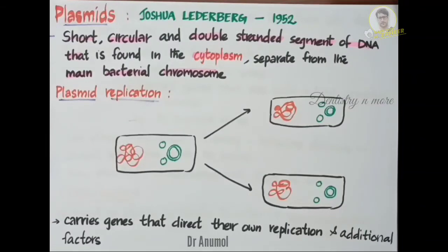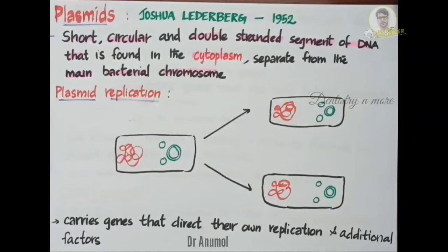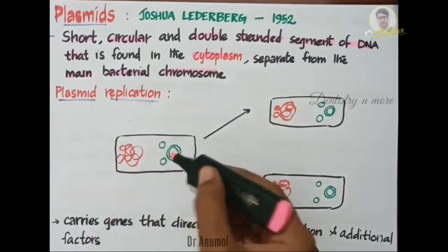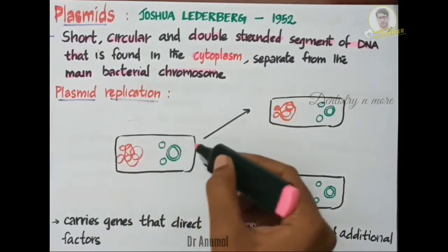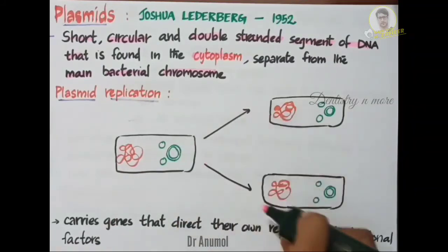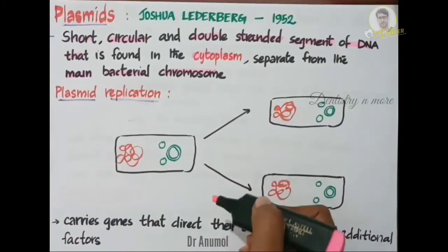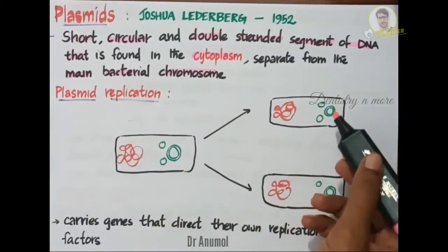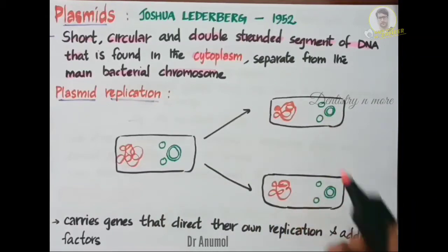So how do plasmids replicate? They replicate in the same way as the main bacterial chromosome does. Usually they undergo binary fission — these plasmids undergo binary fission along with the cell division and they get divided.